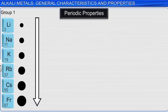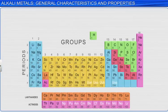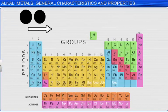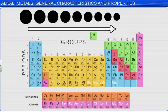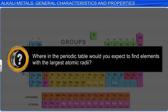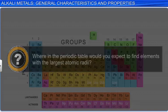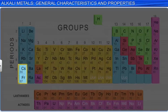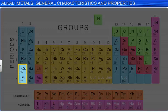As shown in the graphic, moving from left to right across a period, the alkali metals have the largest atomic radius of any element in the period. Try to answer this question on your own before you proceed. Where in the periodic table would you expect to find elements with the largest atomic radii? The largest atoms are found in the lower left hand corner of the periodic table: cesium and francium.